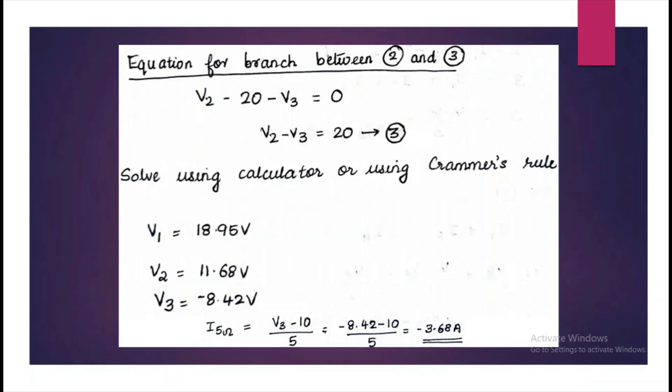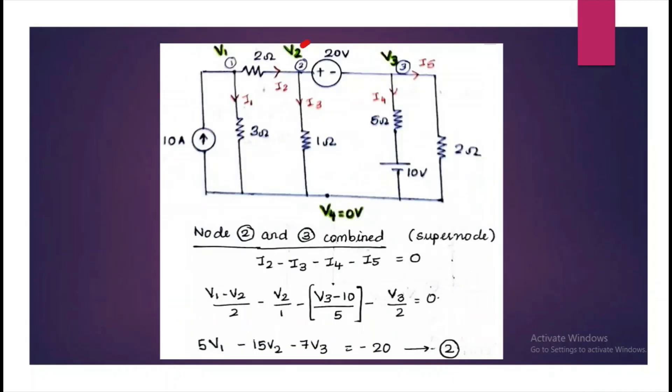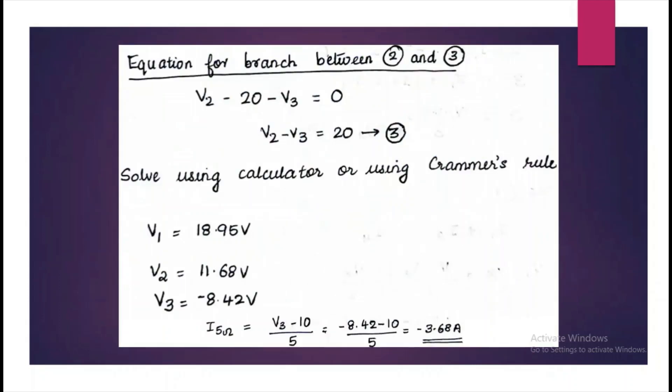Next we have to write the equation for the branch between 2 and 3. So it is V2 minus 20 minus V3 is equal to zero. So this is our equation and rearrange that to get equation 3.